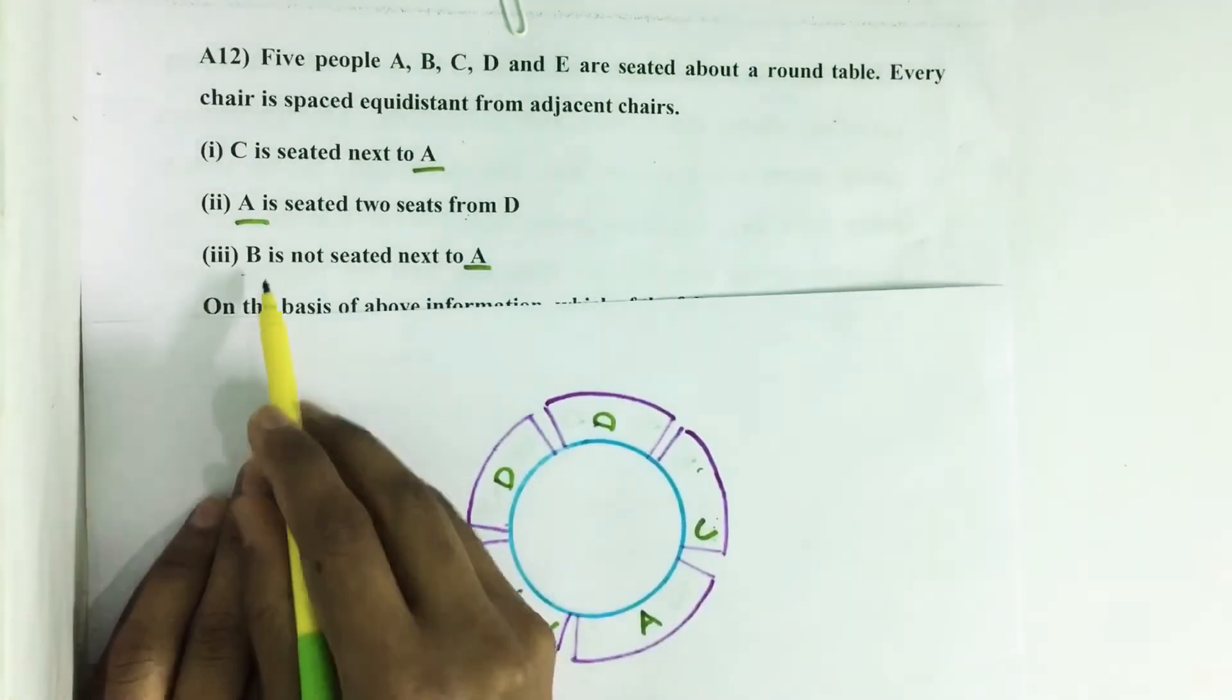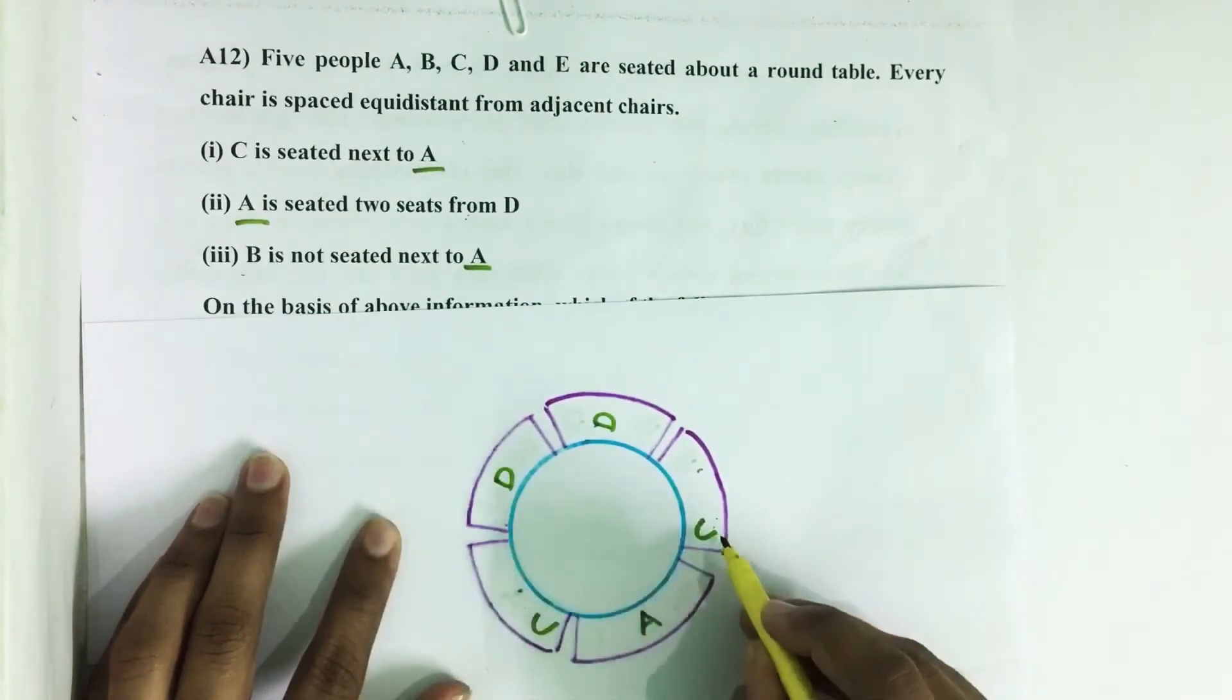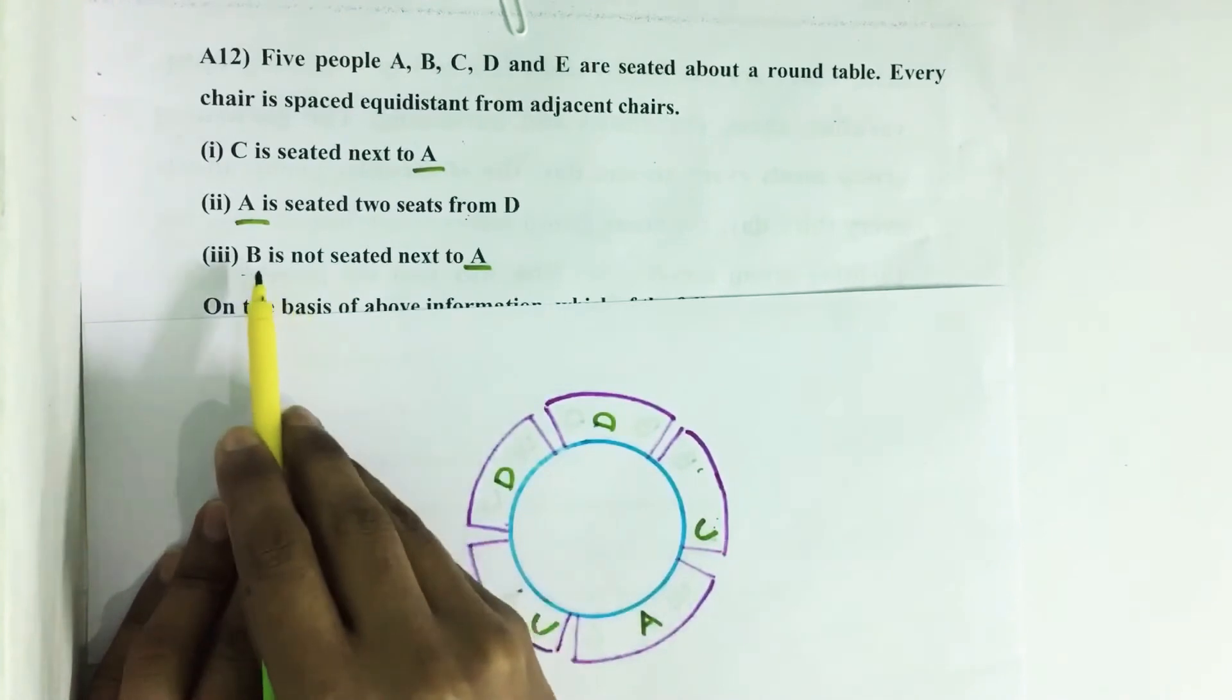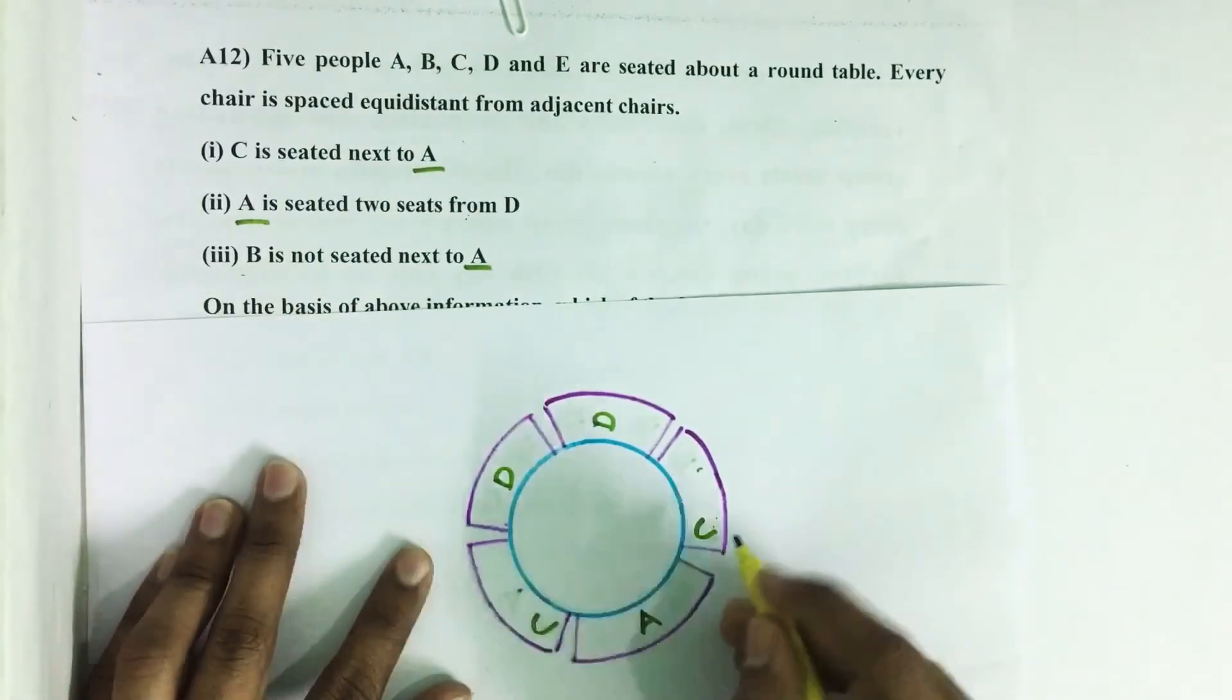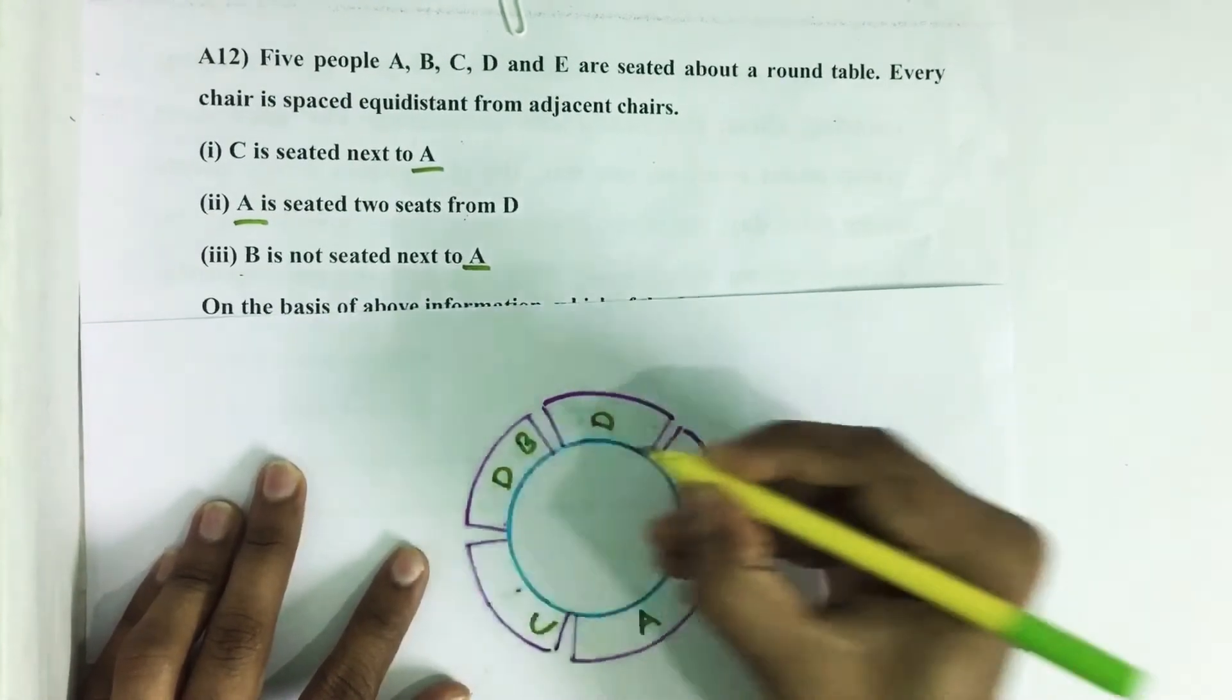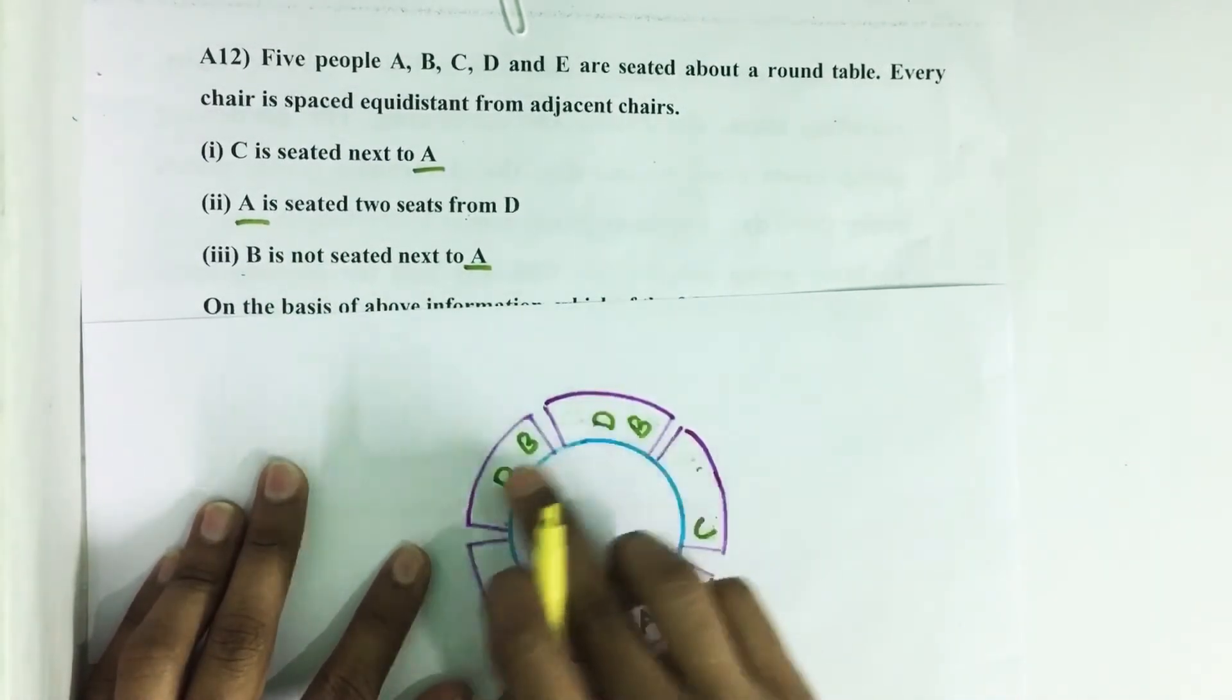Then statement three: B is not seated next to A. Next to A there are two seats which is occupied by C. Then in the third statement it is given that B is not seated next to A, that means either here or here. These are the two seats for B.